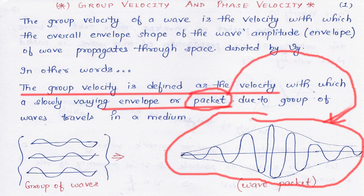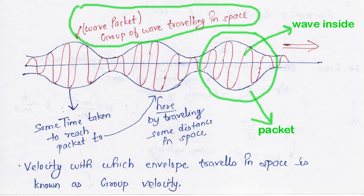In other words, the group velocity is defined as the velocity with which a slowly varying envelope or packet, due to a group of waves, travels in a medium. The waves have varying amplitude, and when this entire packet moves in a certain direction with a certain velocity, that velocity is called the group velocity.